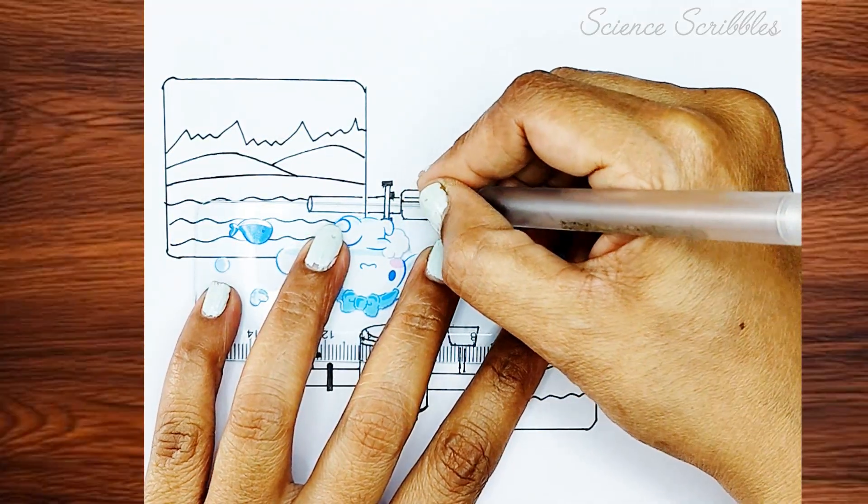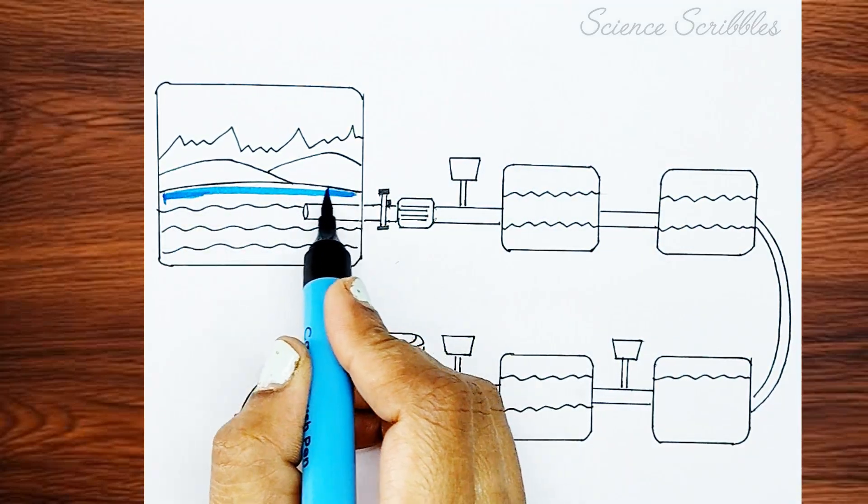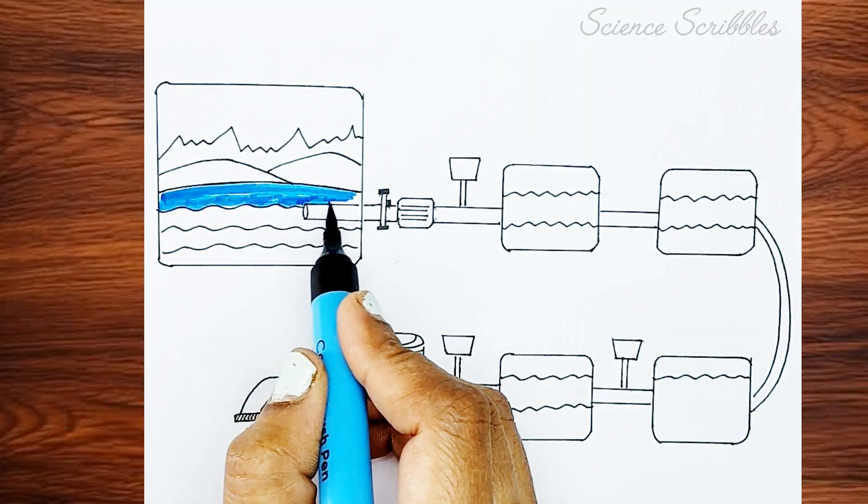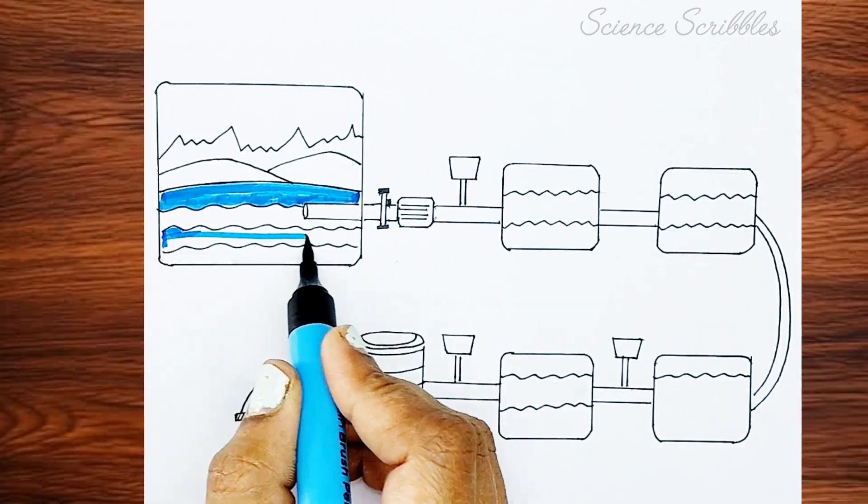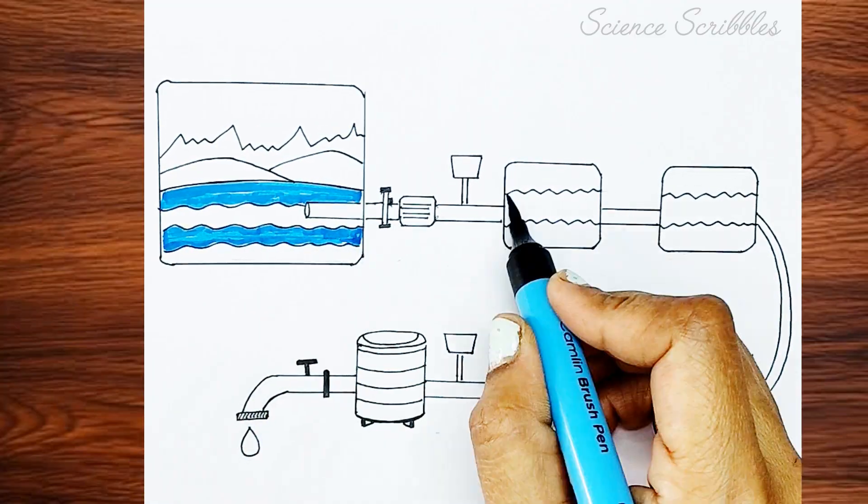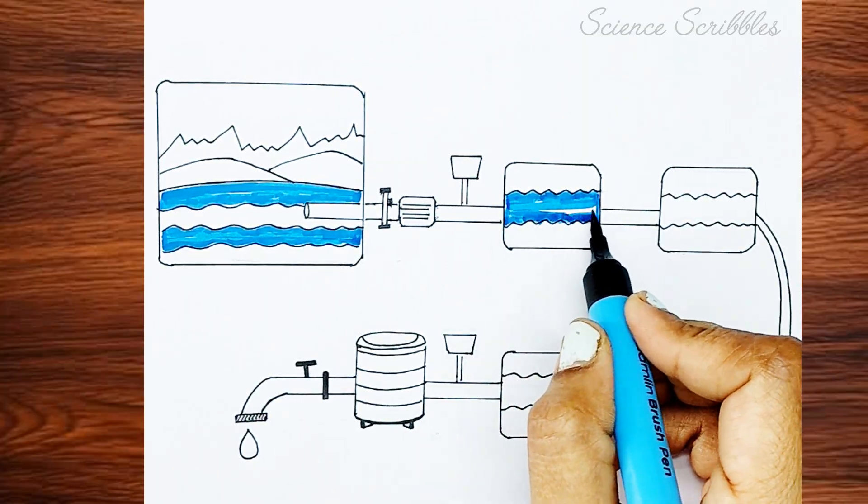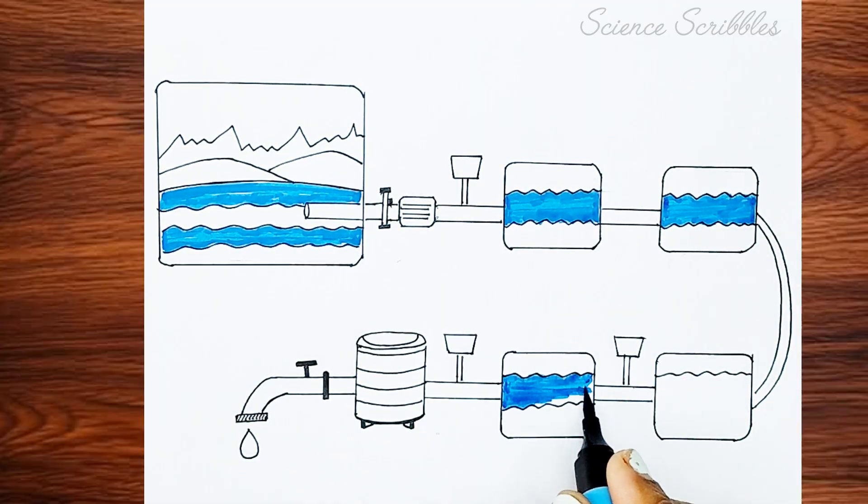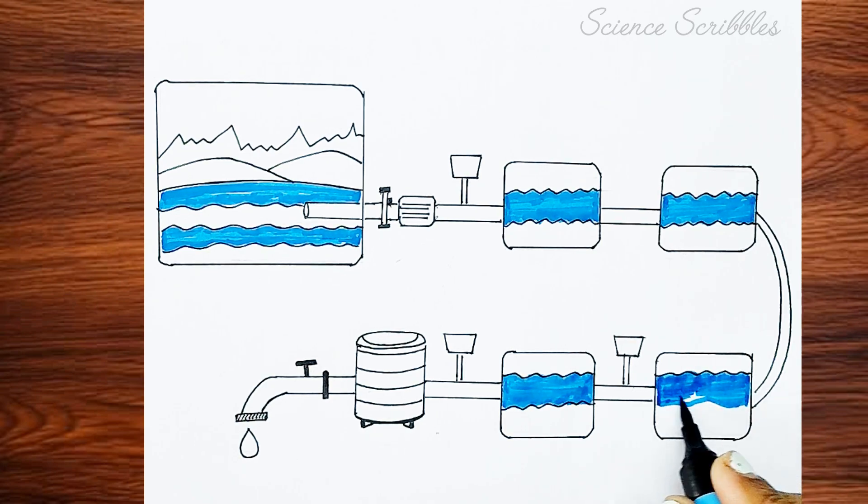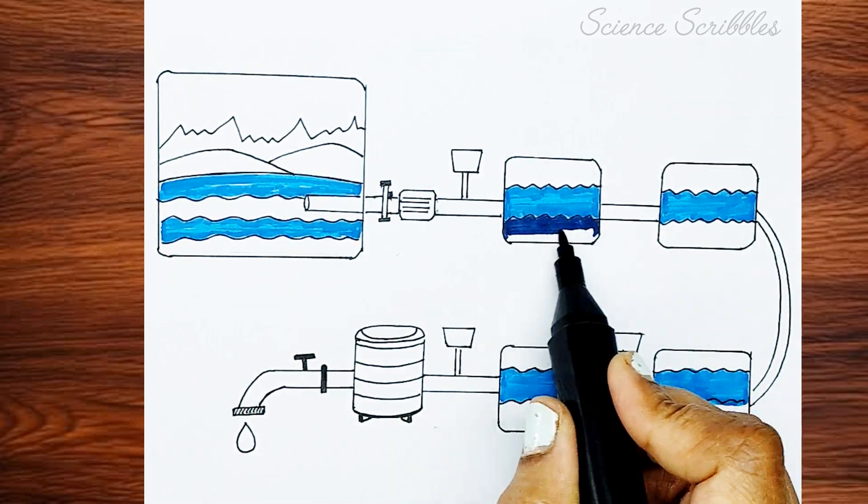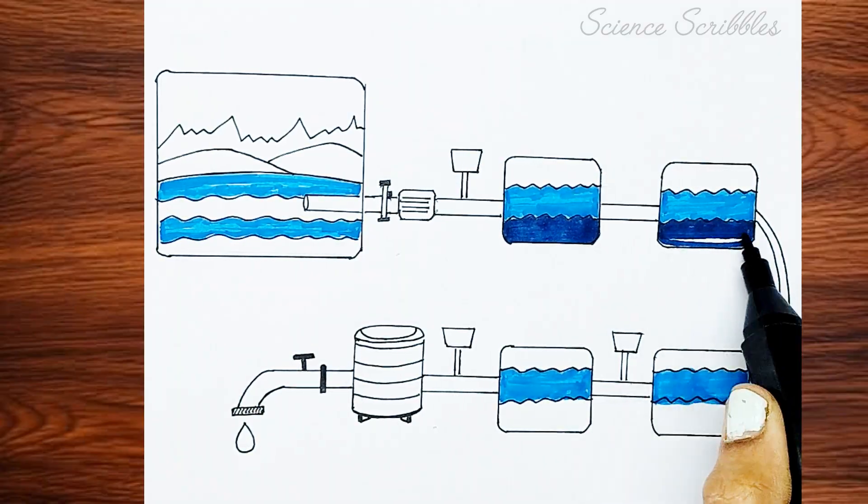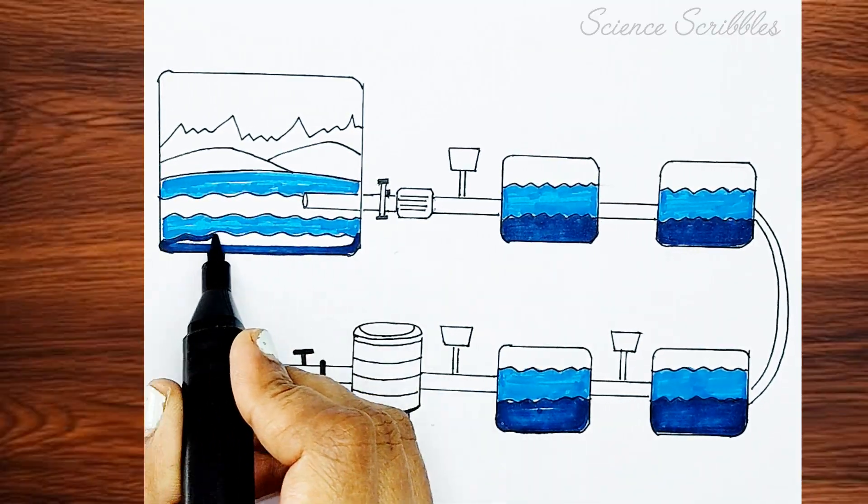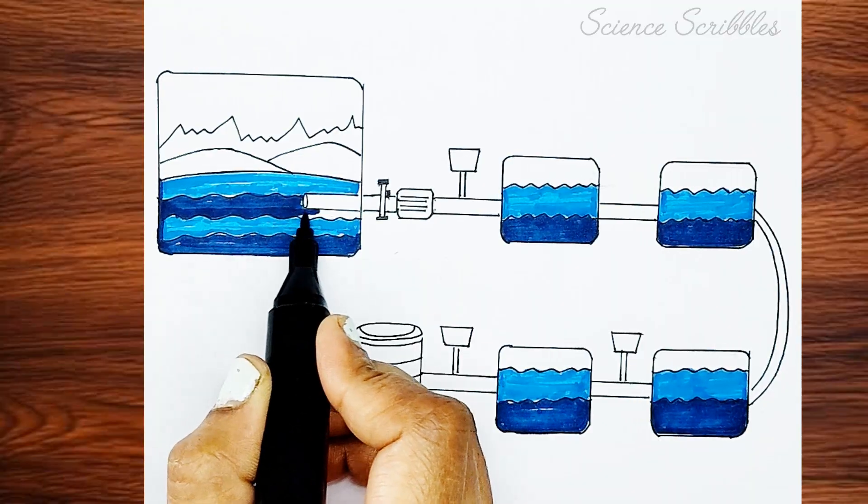For the first screening process, we will add vertical lines on the bar screen to make it visually clear. Now, let's start coloring. I am using a sky blue shade to color the water, and for more depth, I am also using a dark Prussian blue. Let's do it. I love it.